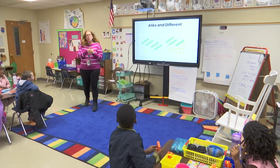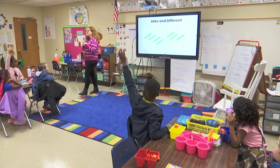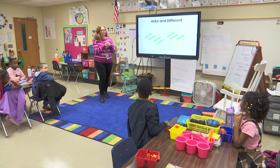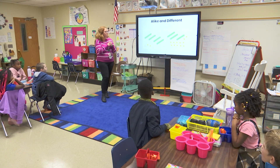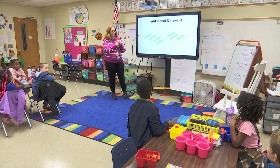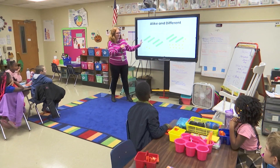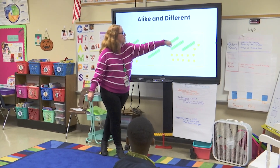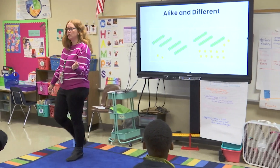Who can give me a quiet thumbs up when you have one way that these two pictures are alike or different? So the cubes — there are more ones over here, and I like that word you used. There were tens over here, so our ten rods have more here but less ten rods there.